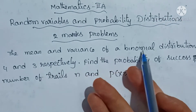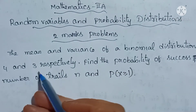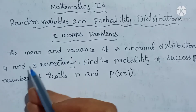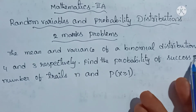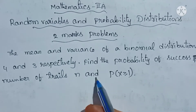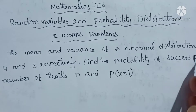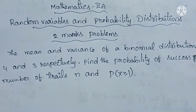The mean and variance of a binomial distribution are given as 4 and 3 respectively. Mean value is 4, variance value is 3. Find the probability of success P, the number of trials n, and P(X ≥ 1).